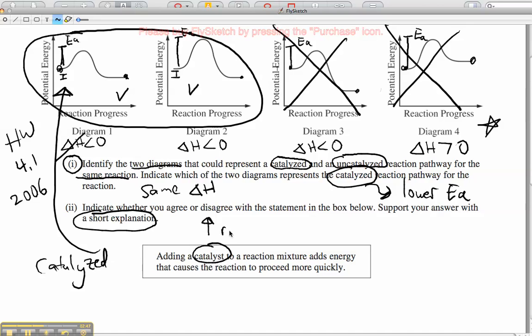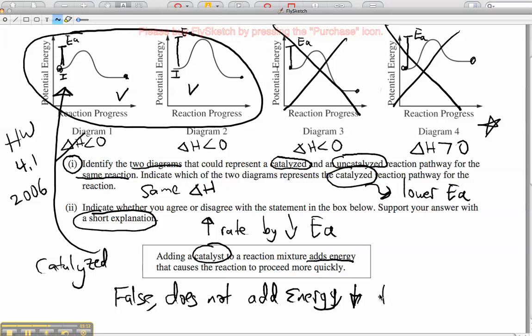Okay, we know a catalyst increases the rate by decreasing Ea. To a reaction mixture adds energy that causes the reaction to proceed more quickly. Okay, we are going to disagree with this. This is false. It does not add energy. That would be increasing the temperature. It does not add energy, it just decreases the energy required by decreasing the energy of activation.